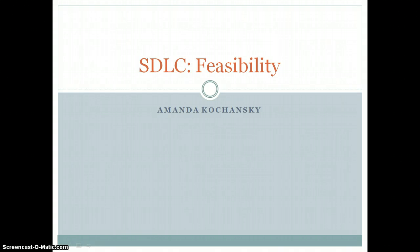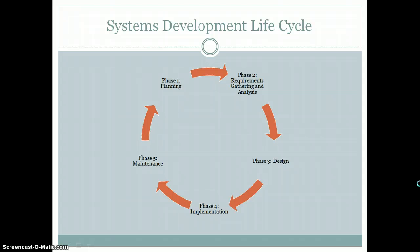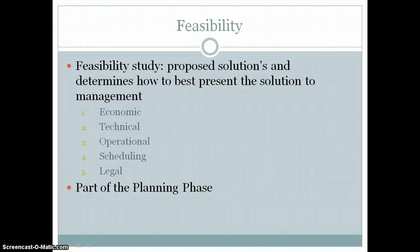The systems development life cycle has five phases: planning, gathering and analysis, design, implementation, and maintenance. Feasibility is the measure of how beneficial or practical an information system will be to an organization, and should be measured continuously throughout the SDLC process.